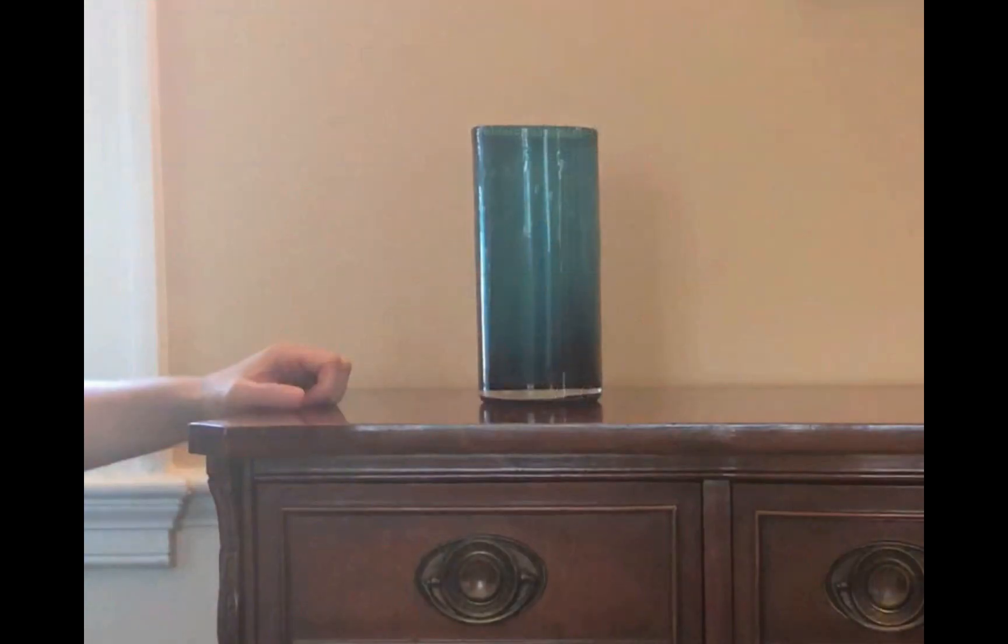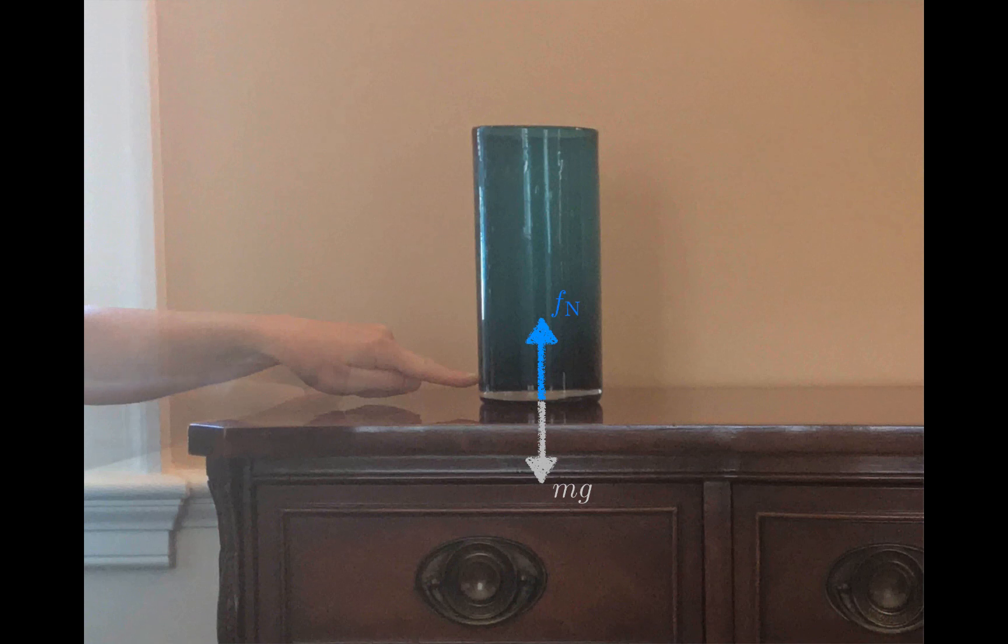Now let's talk about static friction. Even if an object does not slide over a surface, it's possible for friction to be present. Let's use this vase as an example. When this vase is just sitting on the surface, there are just two forces acting on it, mg and the normal force. But when the vase experiences a little push, a frictional force arises to balance that pushing force.